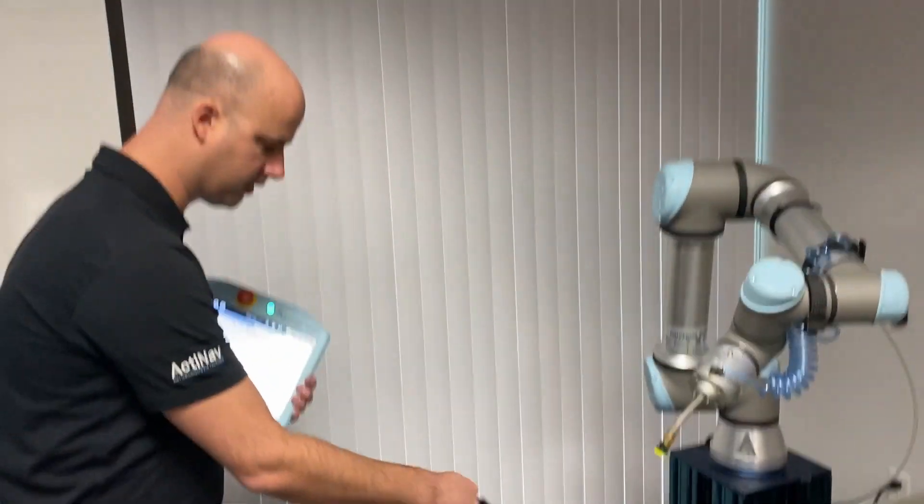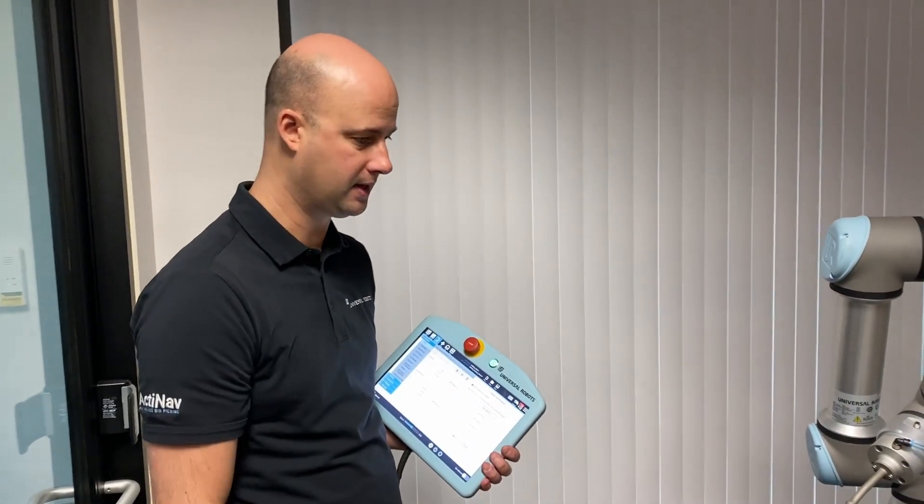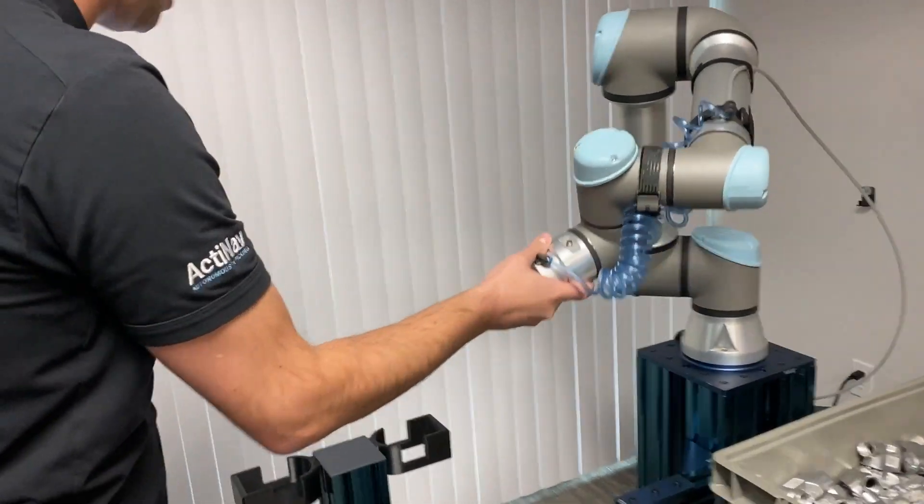We just want to have the robot look at this corner in four different ways, and then it'll tell us what the tool center point is, right here at the tip of this suction cup.